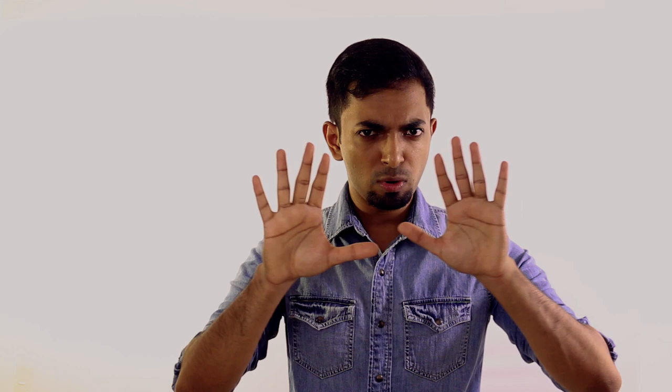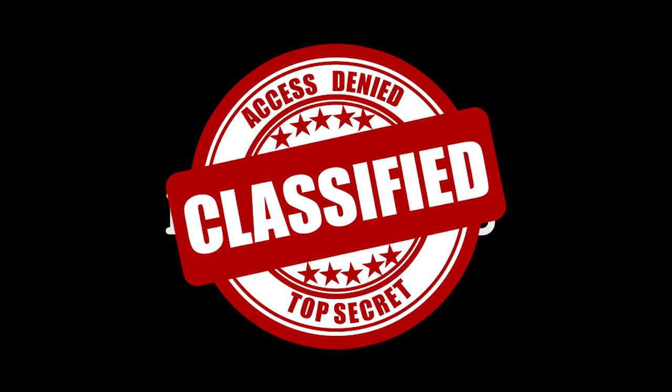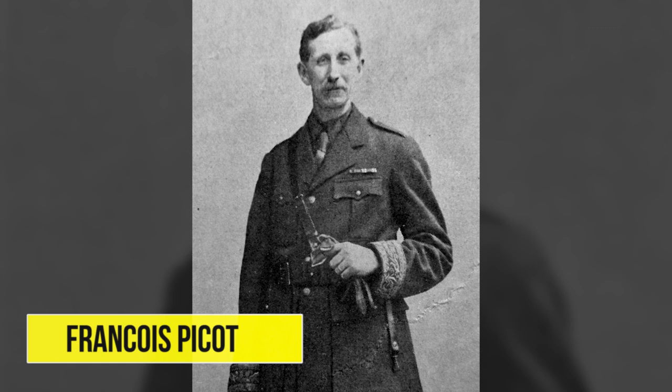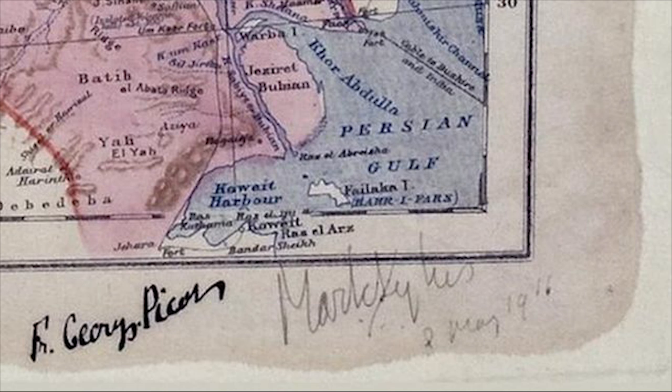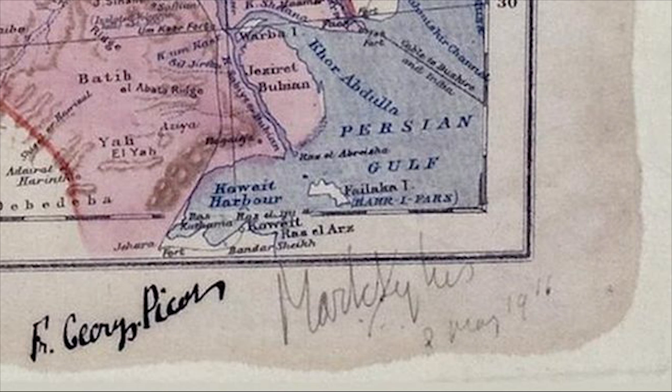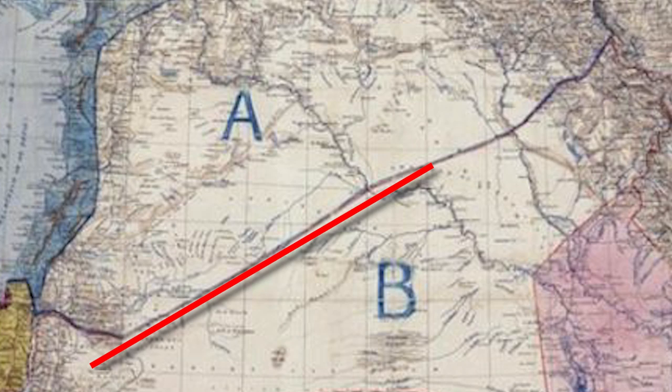But that was all about to change. In May 1916, in secrecy unknown to the outside world, British diplomat Mark Sykes and his French counterpart François Picot devised a plan on how to share Ottoman territory between Britain and France once they defeated the Ottoman Empire. This means they signed the agreement three years before actually winning the war in 1919 — talk about confidence.